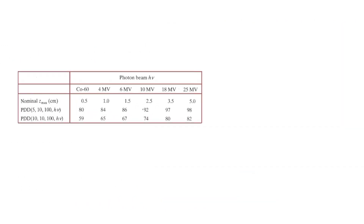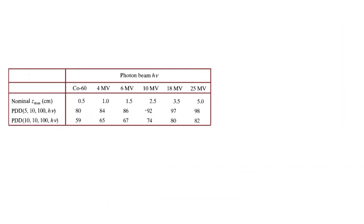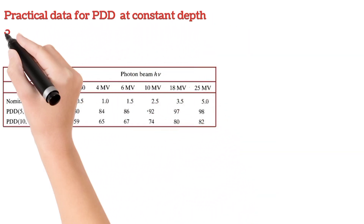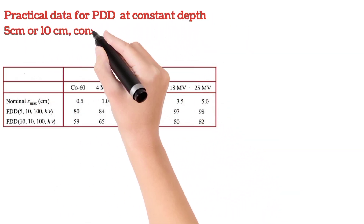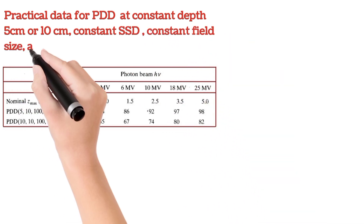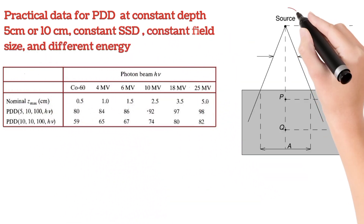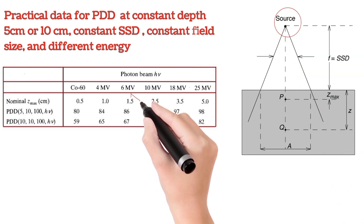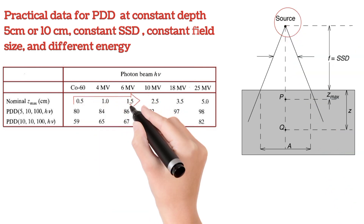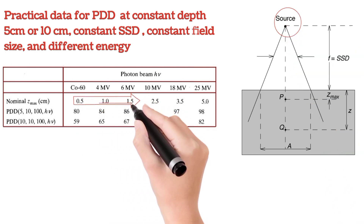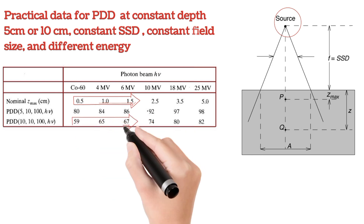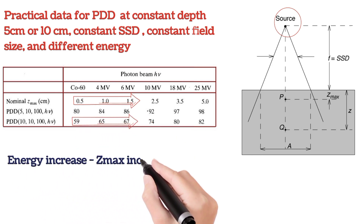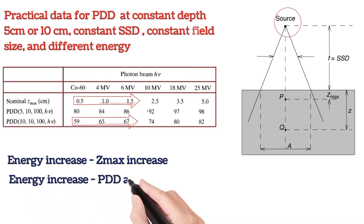This is the practical measured data of PDD at a fixed depth, constant SSD, and constant field size. For different energies, you observe that Z max increases when energy increases. PDD and Z max are directly proportional to beam energy.